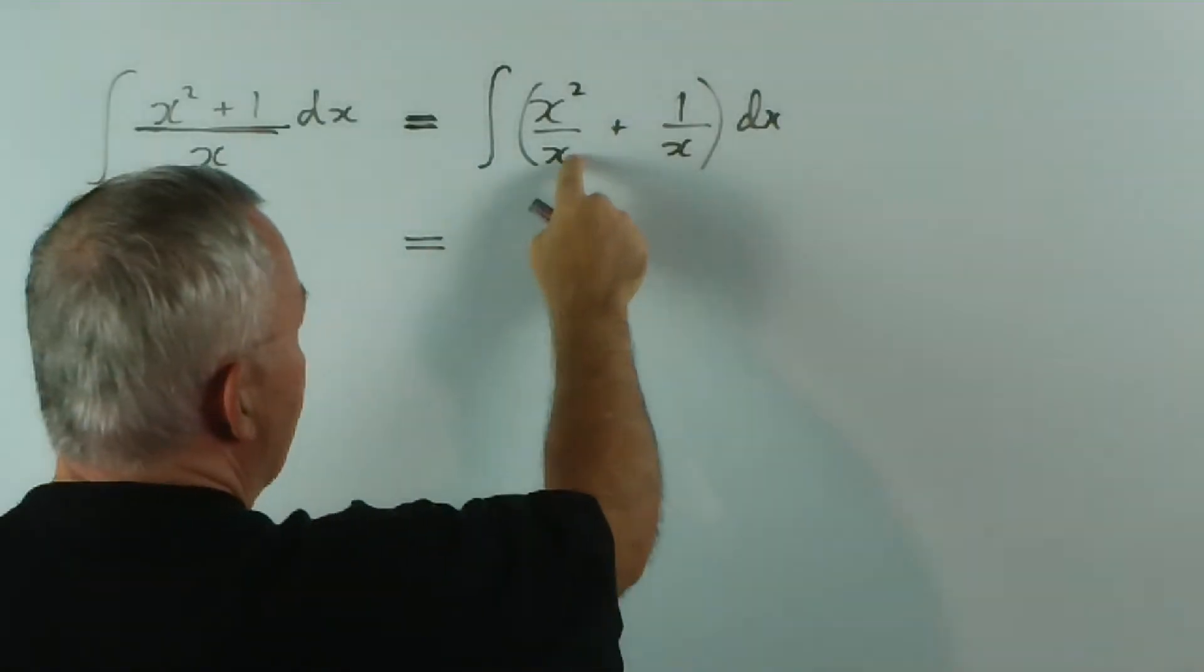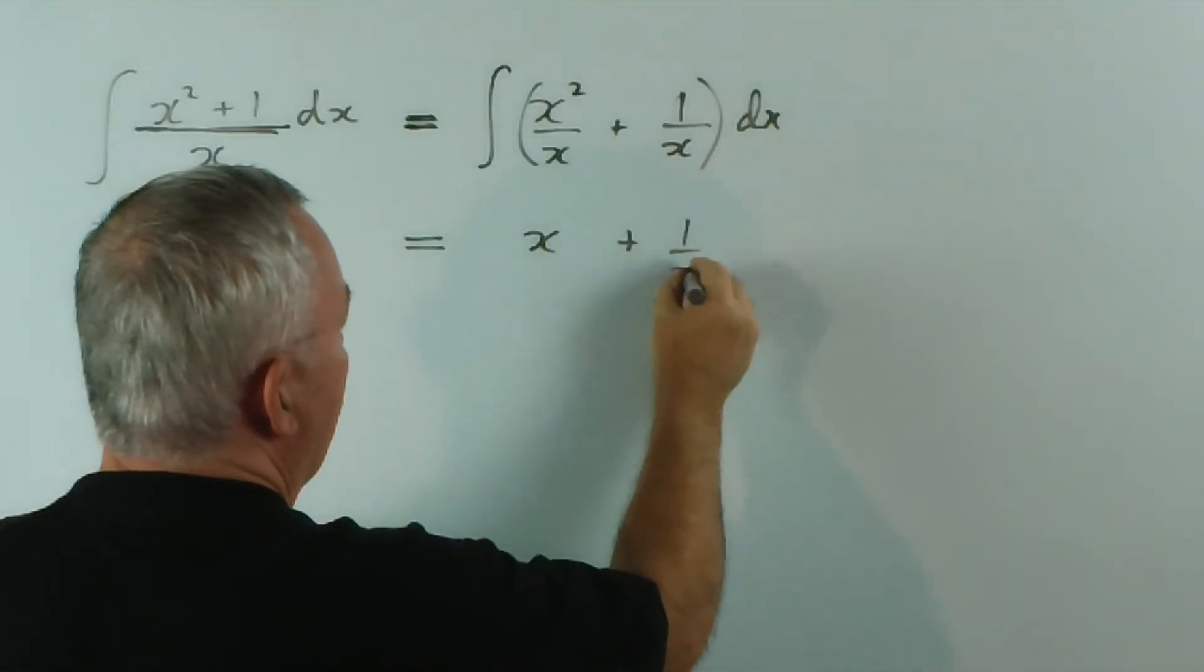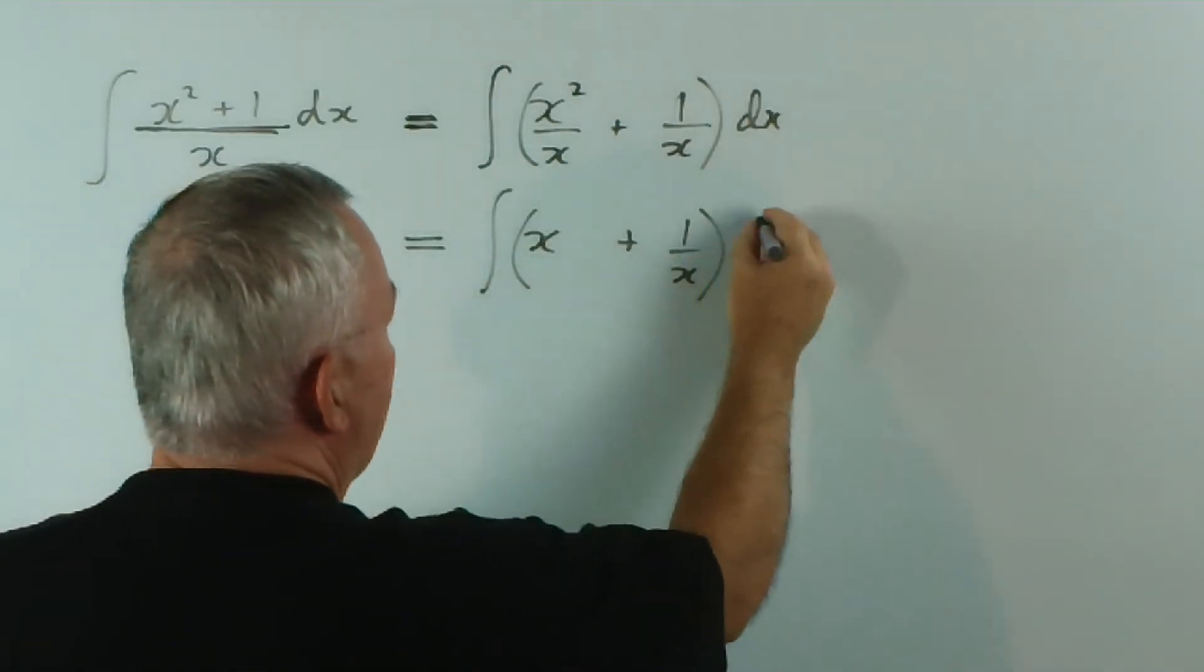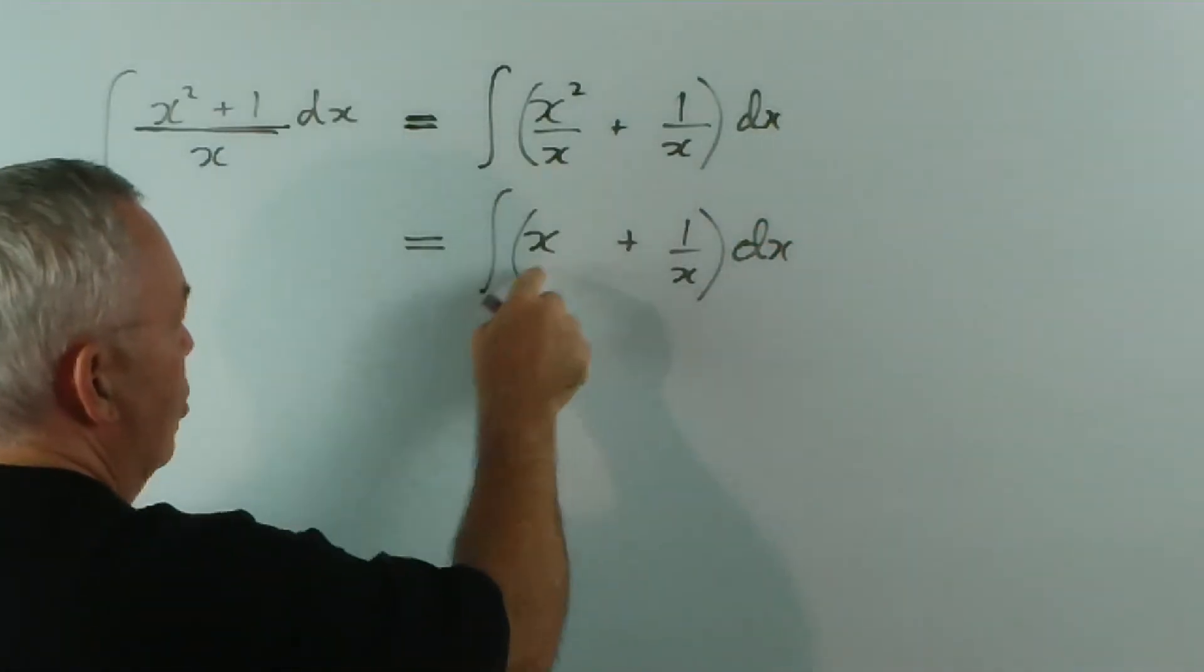Now, we can simplify this. x into x squared gives x. Can't change the second part of the expression, but this bit certainly could be changed.